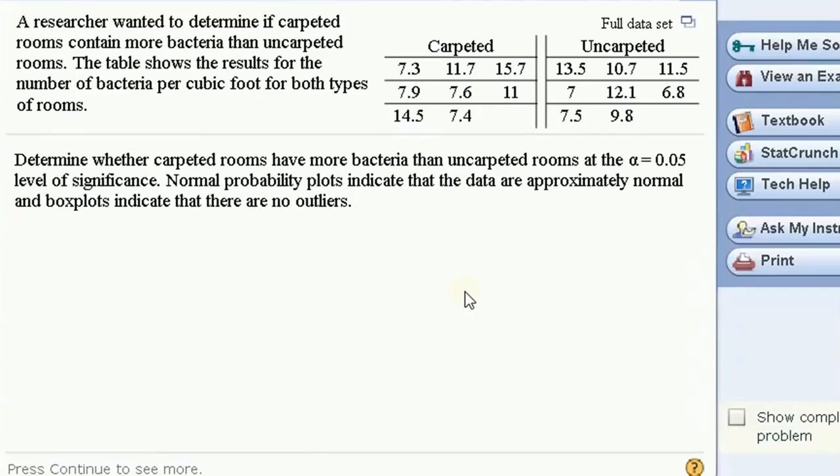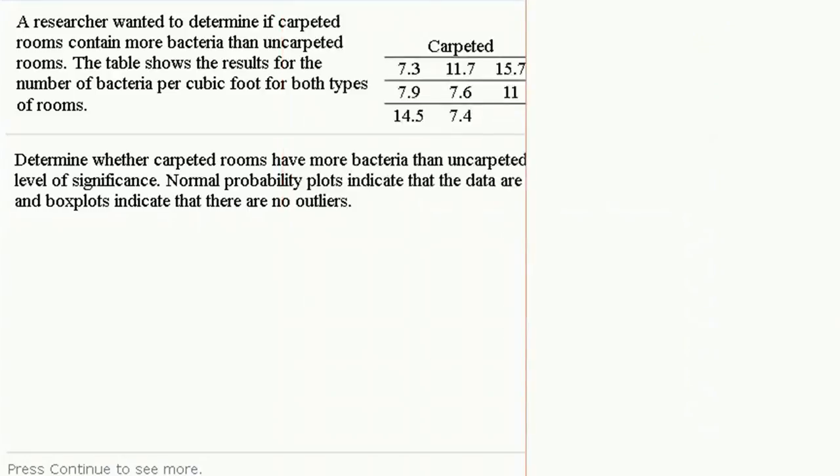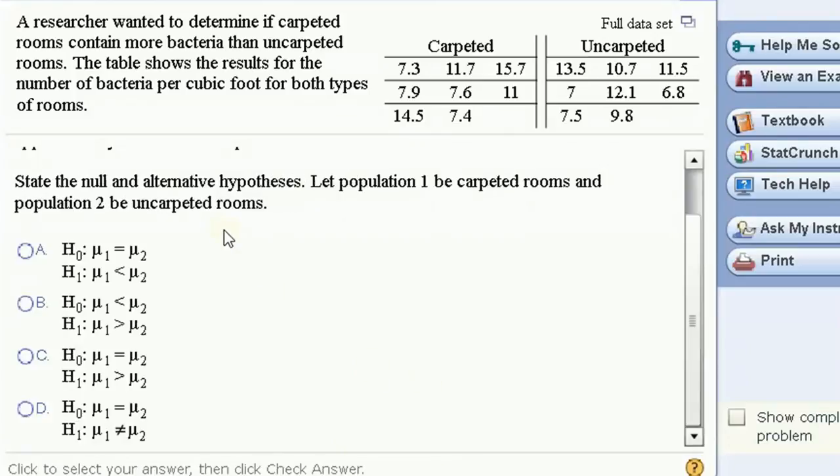A researcher wanted to determine if the carpeted rooms contain more bacteria than uncarpeted rooms. The table shows results for both, the number of bacteria per cubic foot for both types of rooms. So let's open this data set in StatCrunch. First, let's answer some questions. We want to determine whether carpeted rooms have more bacteria. At an alpha of 0.05, we're going to assume normality assumptions are all met. So state the null and alternative. The null would be that the two populations have the same mean, but the alternative is that carpeted have more. So that's what we're going to choose. mu1 is greater than mu2. That the mean for carpeted rooms is greater than the mean for uncarpeted rooms.